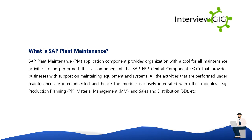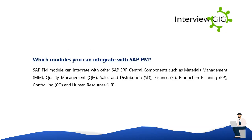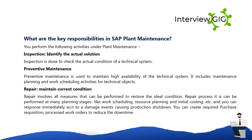For example, integration exists with Production Planning (PP), Material Management, and Sales and Distribution (SD). The SAP PM module can integrate with other SAP ERP central components such as Materials Management, Quality Management (QM), Sales and Distribution (SD), Finance (FI), Production Planning (PP), Controlling (CO), and Human Resources (HR).